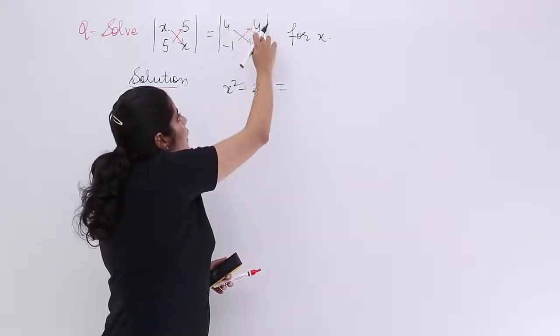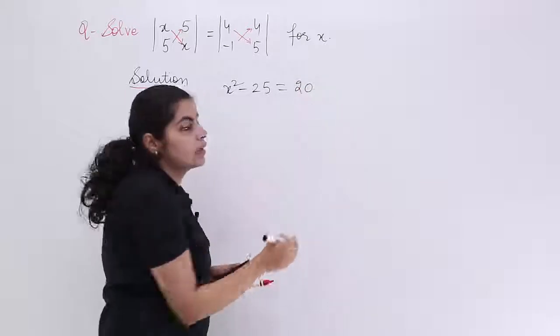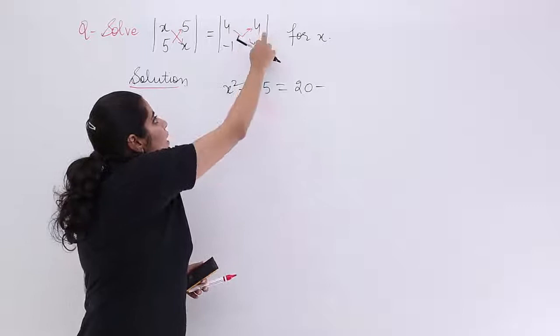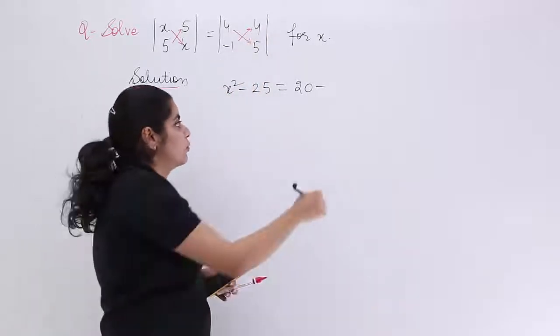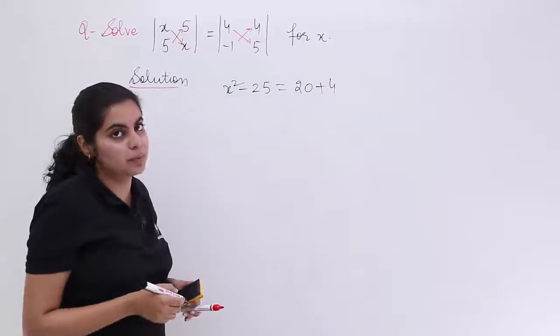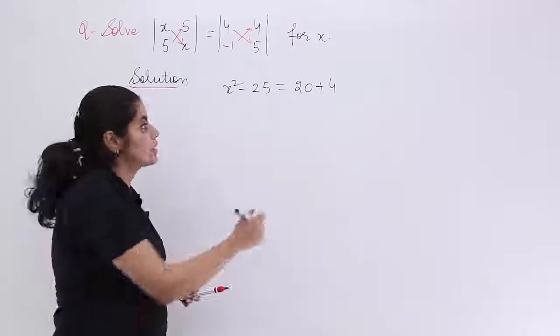Next, 4 into 5. What is 4 times 5? It's 20. Next, minus from the formula. And now we have 1 into 4, which is 4. But negative 1 is also there, so it is minus 4. Now what is minus minus? It is plus. So directly I write plus 4. Now x² - 25 is equal to 20 + 4, which is 24.